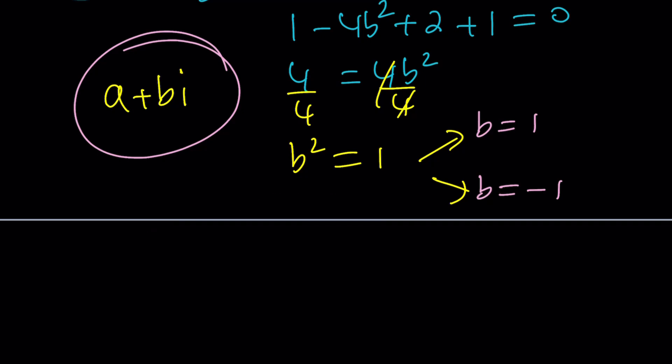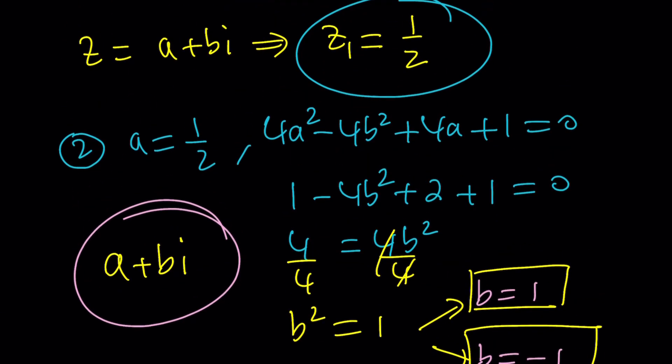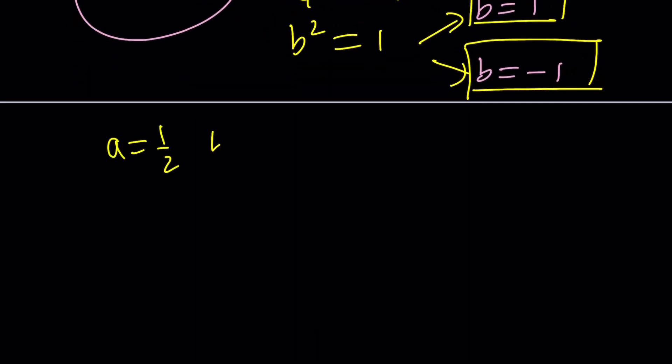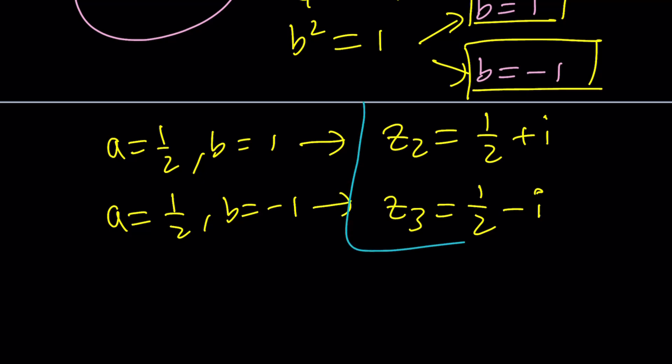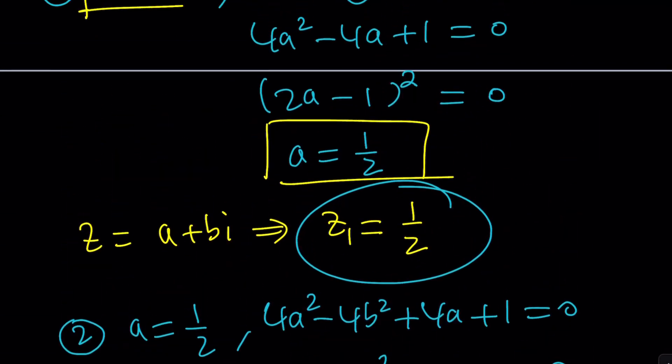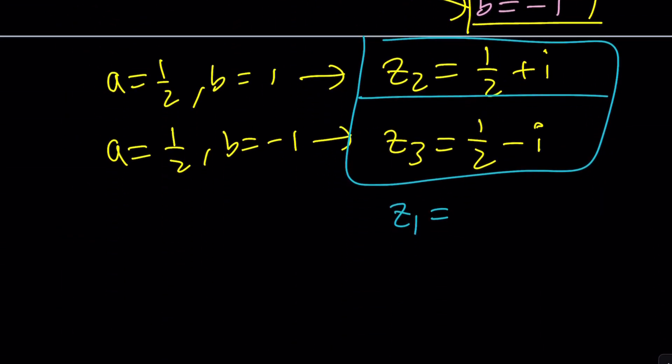So I got two b values: 2b or not 2b! I was able to say that. Now what was the a value? a = 1/2. So a = 1/2 and b = 1 gives us z₂ as 1/2 + i, and a = 1/2 with b = -1 gives us z₃ = 1/2 - i. Those are the z₂ and z₃ values, and remember z₁ was 1/2. This brings us to the end of this video.